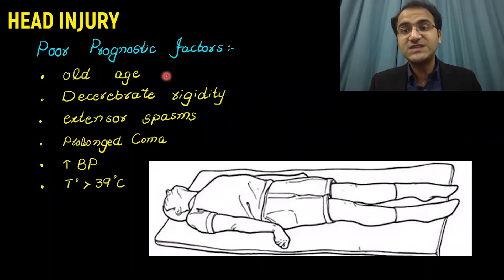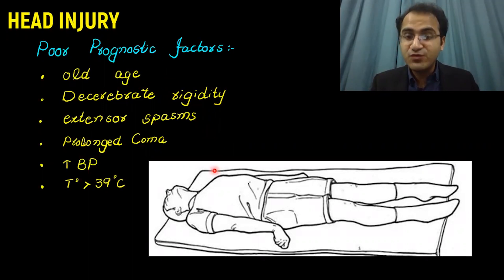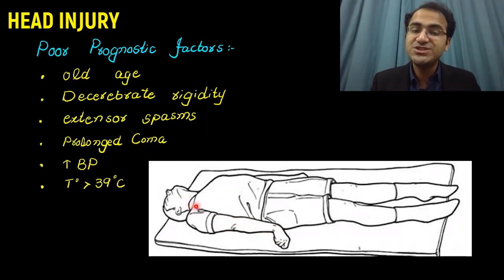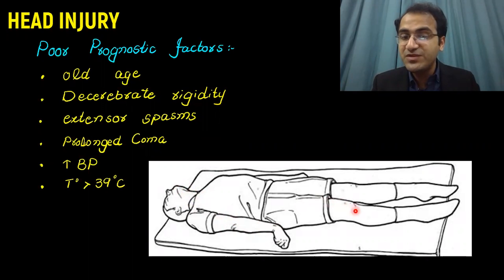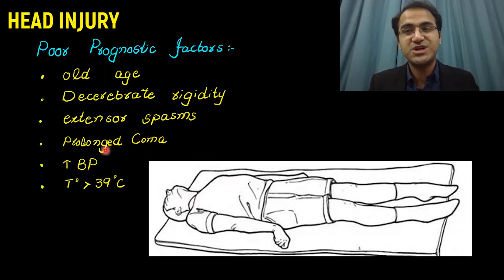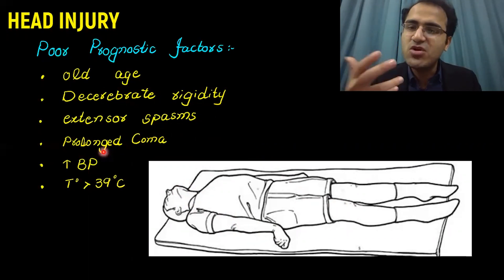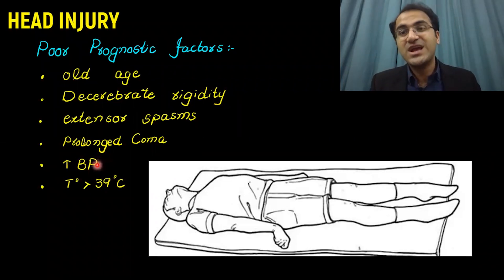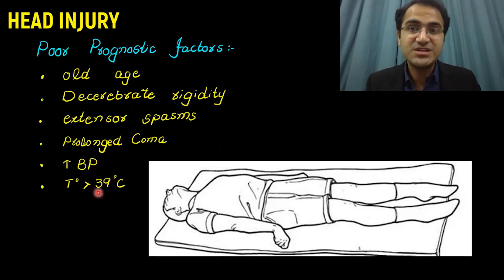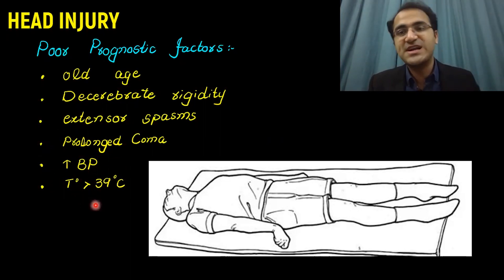Poor prognostic factors in head injury include old age, decerebrate rigidity with extensor muscle spasm, prolonged coma with no improvement in GCS, increased blood pressure from Cushing's reflex due to raised intracranial pressure, and temperature greater than 39°C.